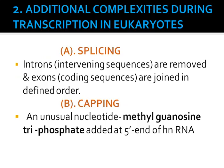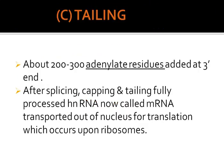During capping, an unusual nucleotide — methyl guanosine triphosphate (m7GpppG) — is added at the 5 prime end of HnRNA. During tailing, about 200 to 300 adenylate residues are added at the 3 prime end of HnRNA. After splicing, capping, and tailing, the fully processed HnRNA — now called mRNA — is transported out of the nucleus for translation. Translation occurs on ribosomes, which are called the cellular factory for protein synthesis.